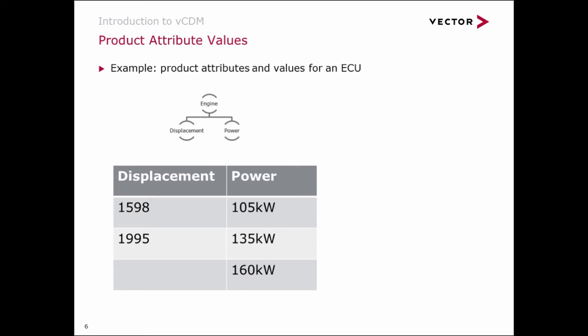Here we have an example. We have our engine, and to describe this more in detail, we have two attributes: displacement and power, and there are different values for these two product attributes.